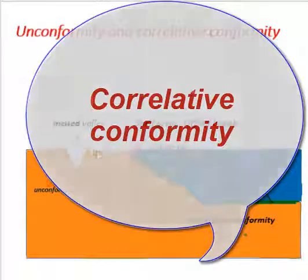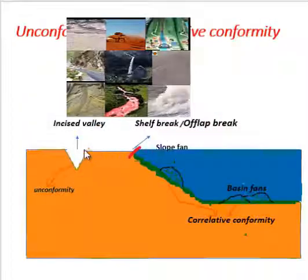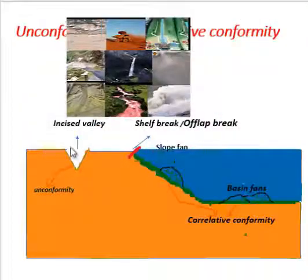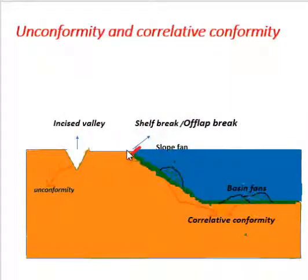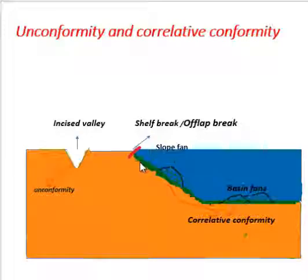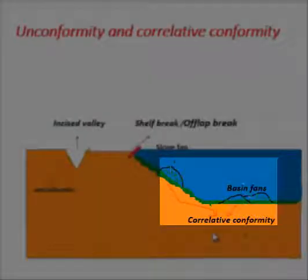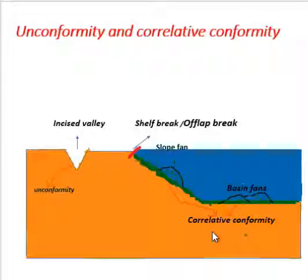The eroded sediments from the shelf area or from the incised valley are redeposited in the form of submarine fans as reworked sediments, producing a correlative conformity. In short, the eroded sediments of the incised valley are redeposited here and produce correlative conformity.